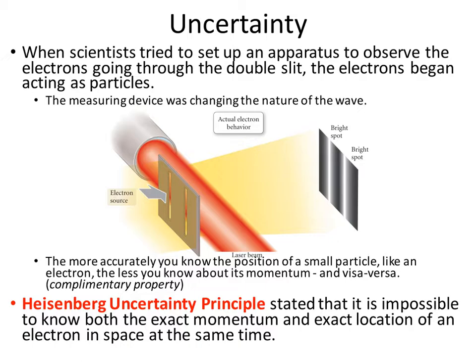The question was, I want to see how these electrons travel through this double slit — so how can we do this? What they tried to do was actually put a measuring device, in this case a laser beam, to measure and see what the electrons were doing as they were passing through these slits. As the electrons went through, they created an interference pattern on the back. But once they set up this measuring device, something strange happened.